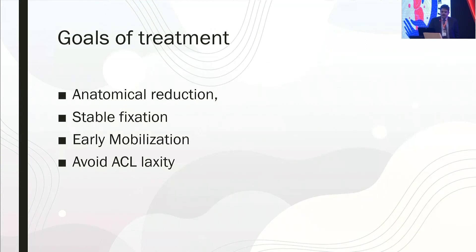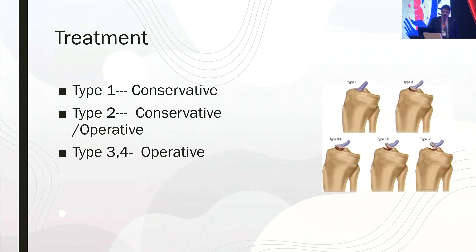The goals of treatment are basically anatomical reduction, stable fixation, and importantly, early mobilization to decrease the chances of complications. The treatment is fairly straightforward for type 1, in which we treat with immobilization, but it is also recommended that you aspirate the hematoma.